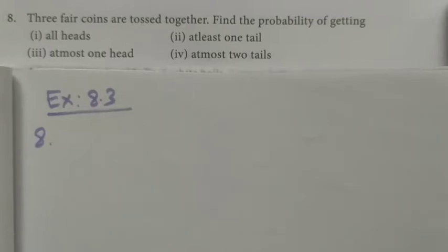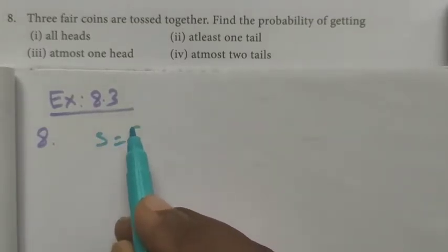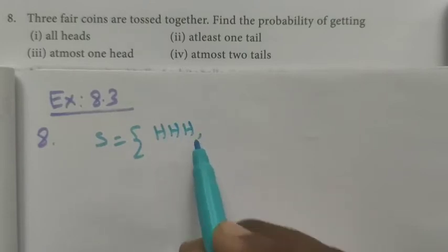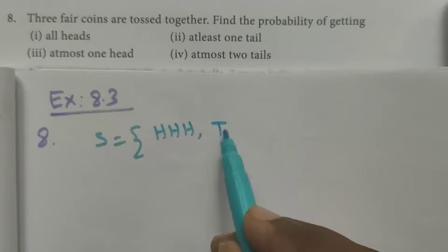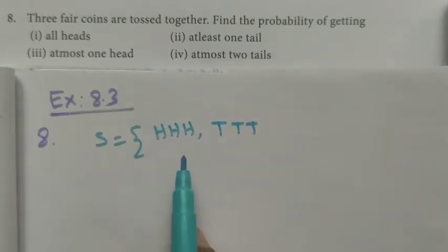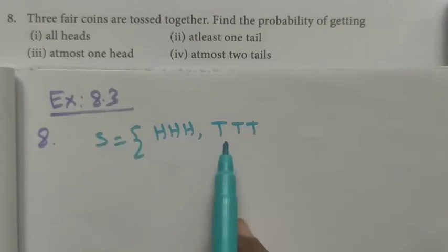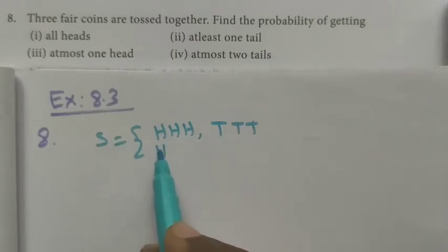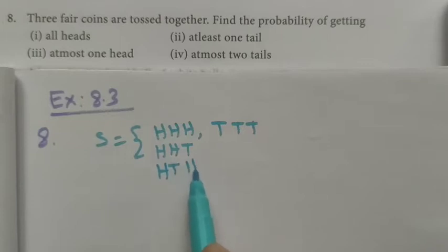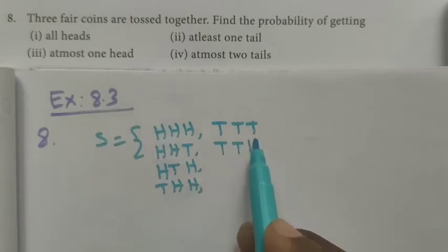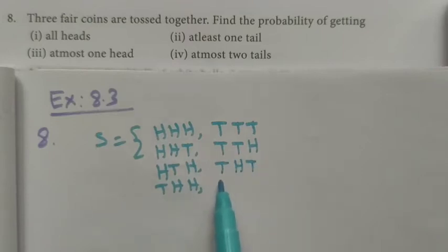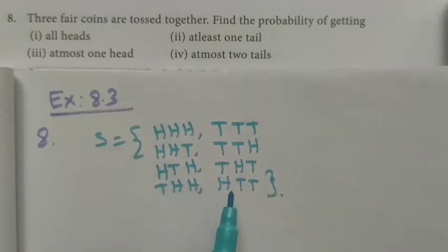Three fair coins are tossed, so we have the sample space S. First we take all three coins having head, then all three coins having tail. The easiest way: start with all heads, then head-head-tail, head-tail-head, tail-head-head, head-tail-tail, tail-head-tail, tail-tail-head, and tail-tail-tail. These are all the possible outcomes.